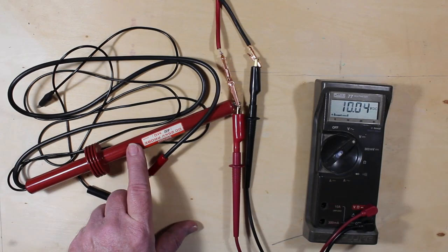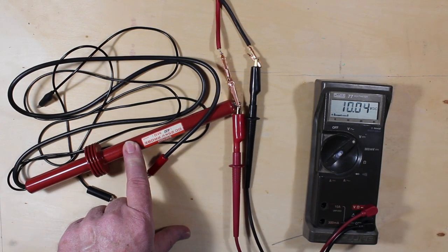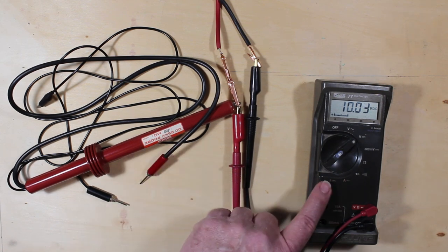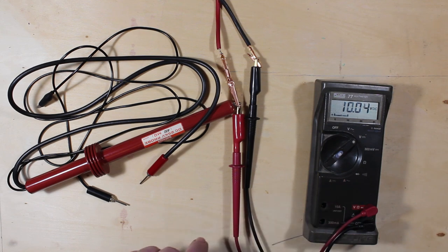This is the high voltage probe that I used to show how you can measure a much higher resistance, 480 megs as an example, on a meter that normally can't go anywhere near that high.